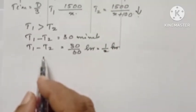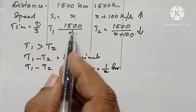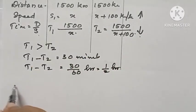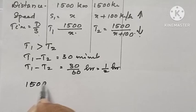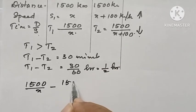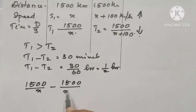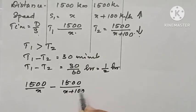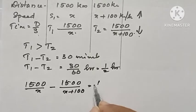We can form a quadratic equation now. The difference between the time is 1 by 2 hours. Therefore, 1500 divided by x minus 1500 divided by x plus 100 equal to 1 by 2.